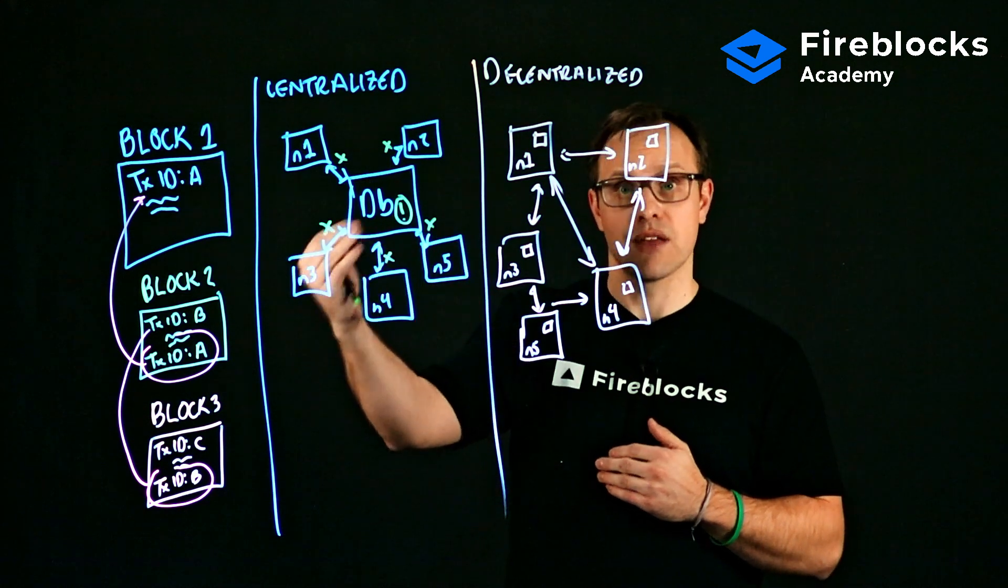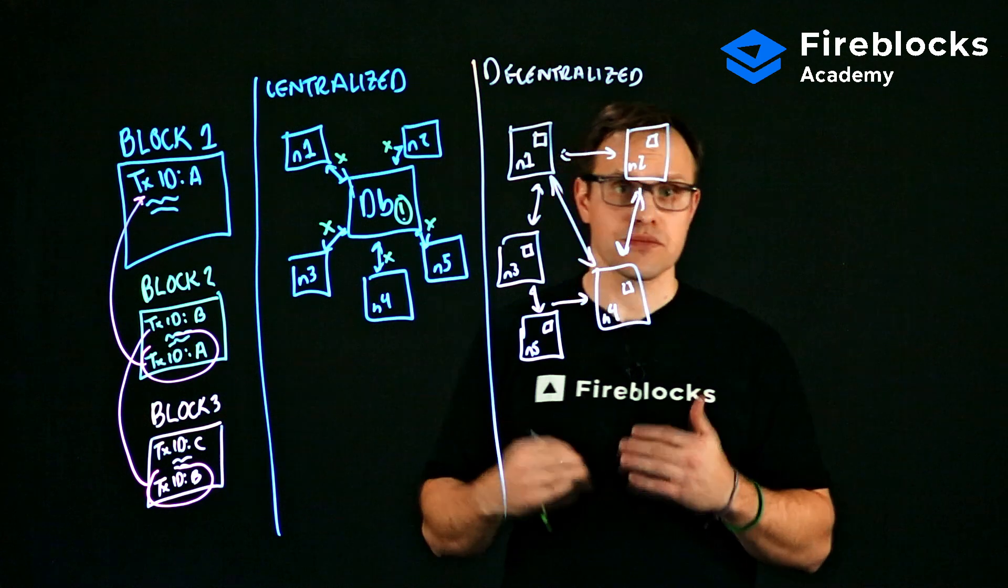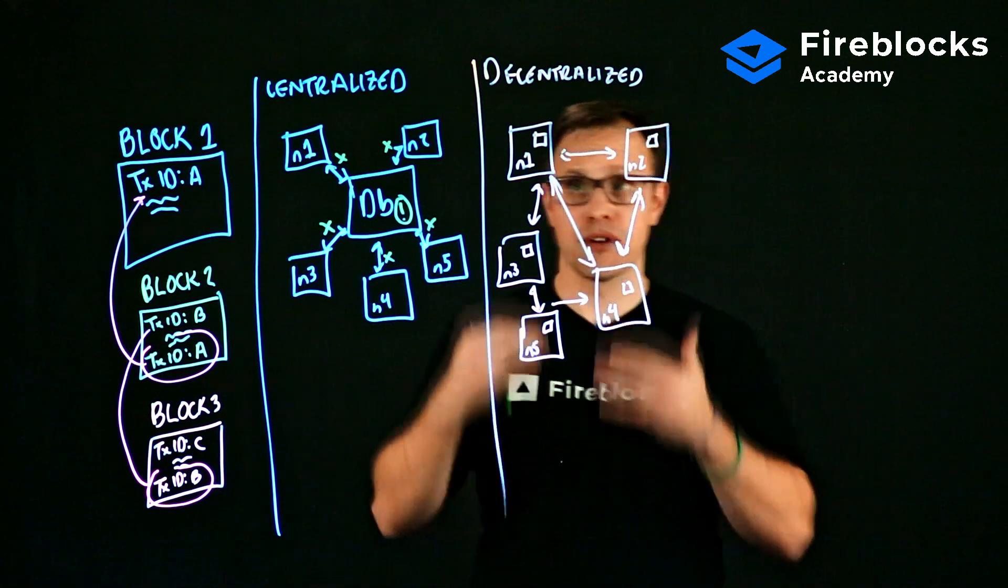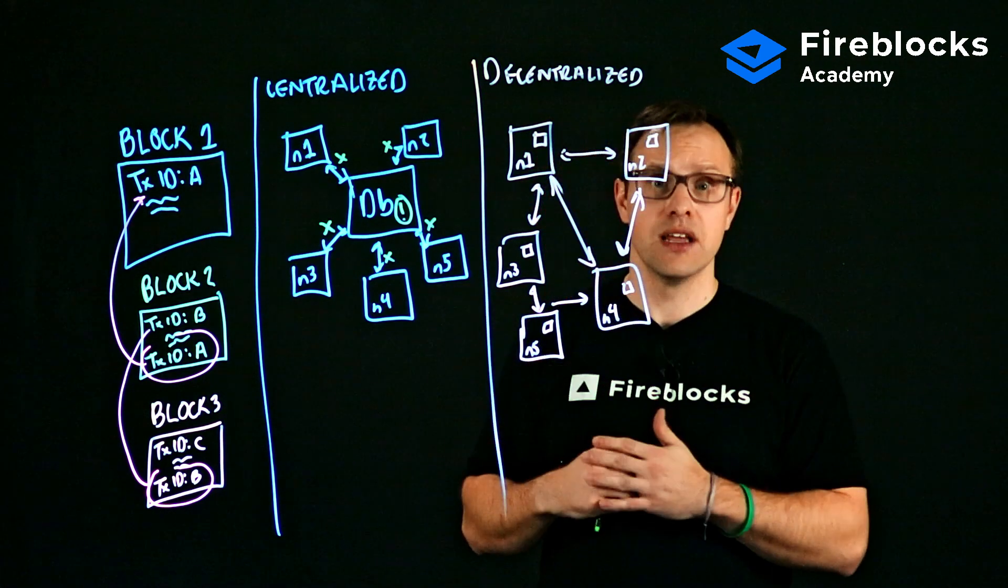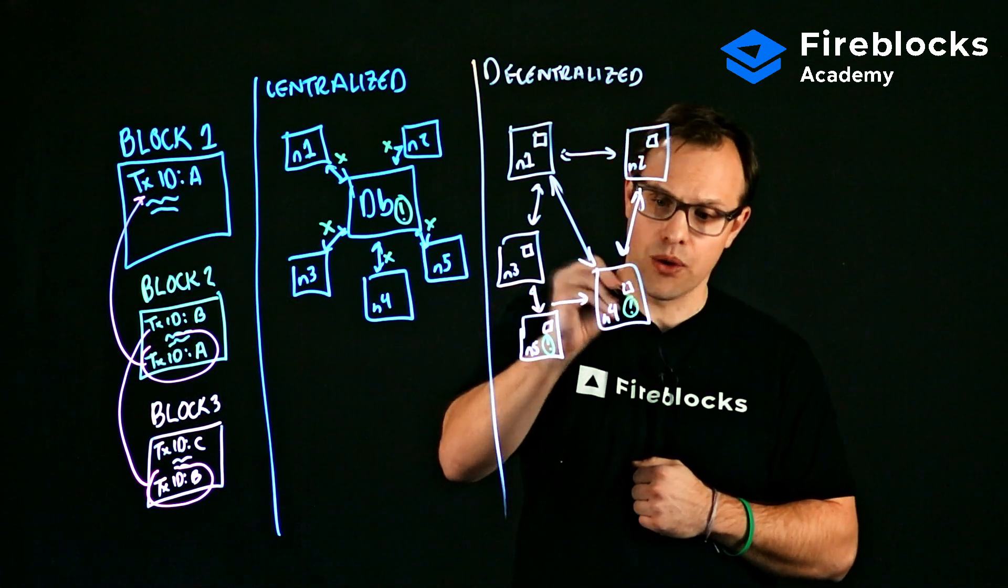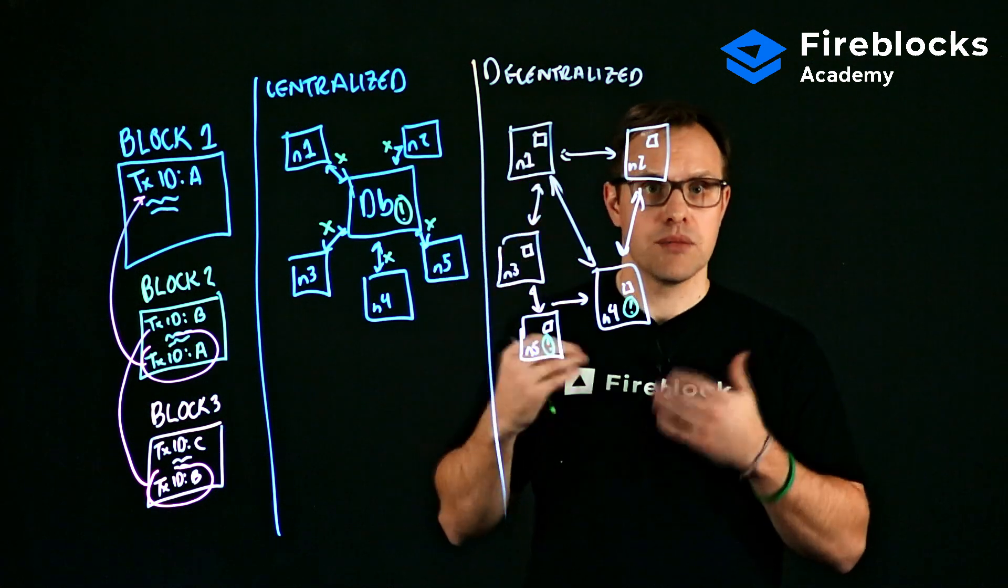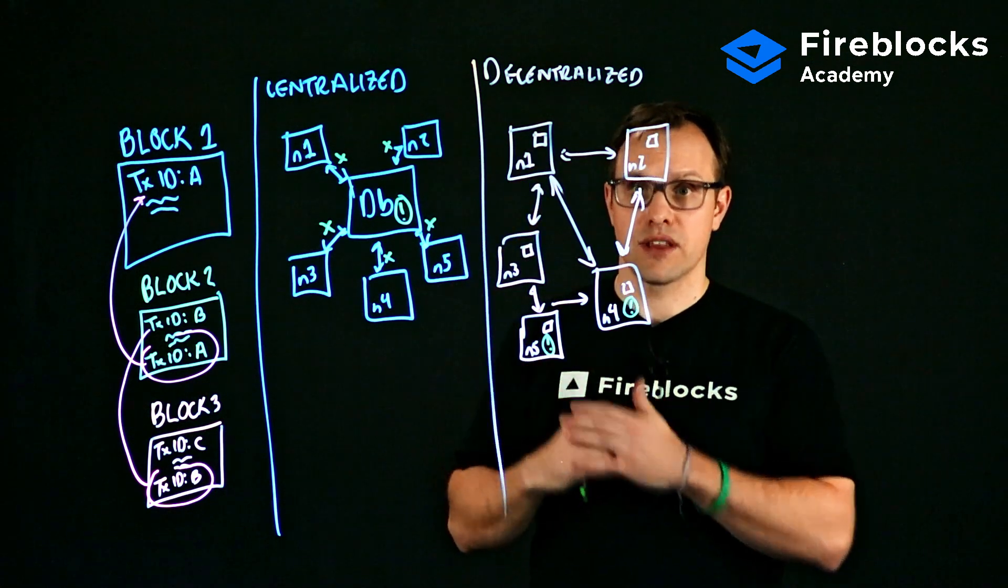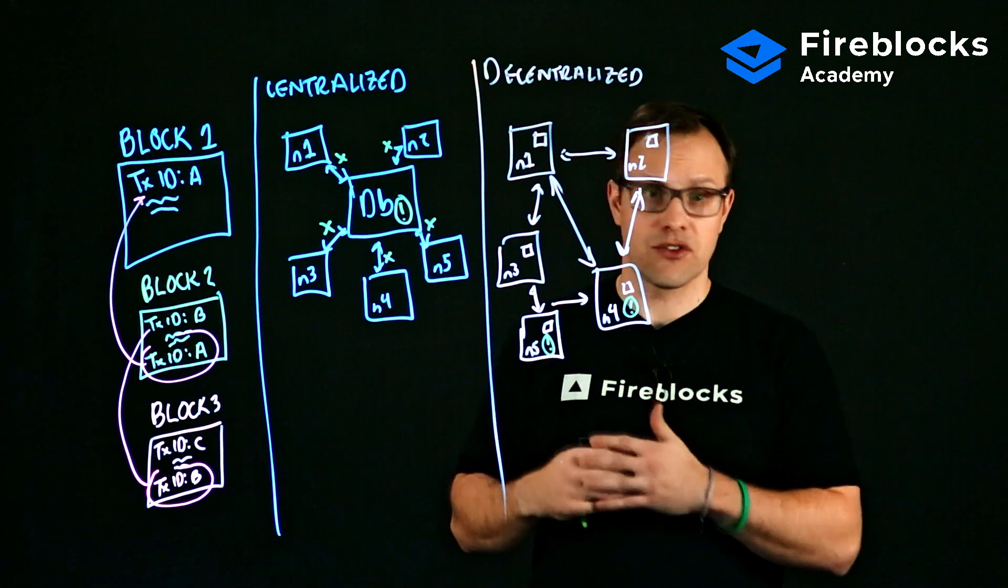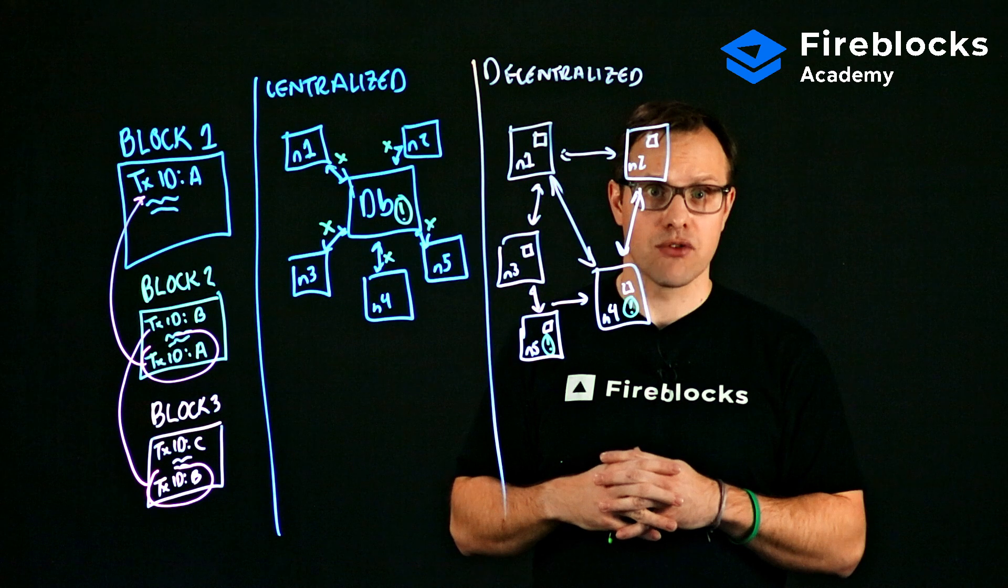In a decentralized environment or decentralized blockchain network, if let's just say we have node five goes down and node four goes down for some reason, nodes one, two, and three can pick up the network traffic. Things can continue to transact. New information can be added or pulled as necessary. Things don't just grind to a standstill.